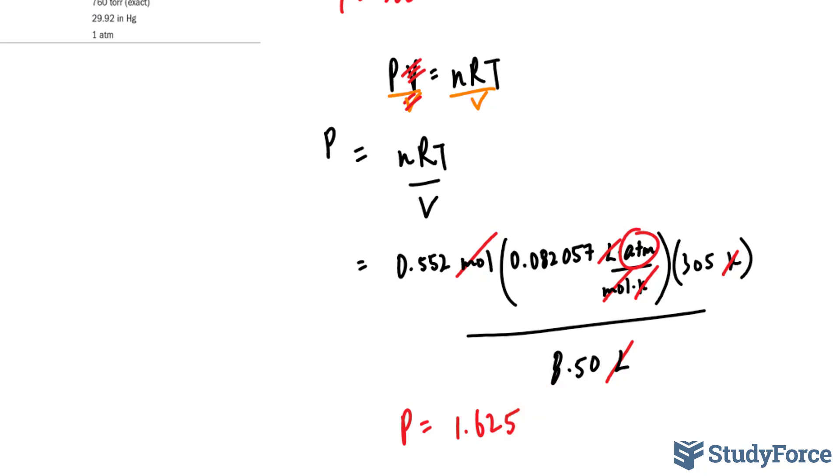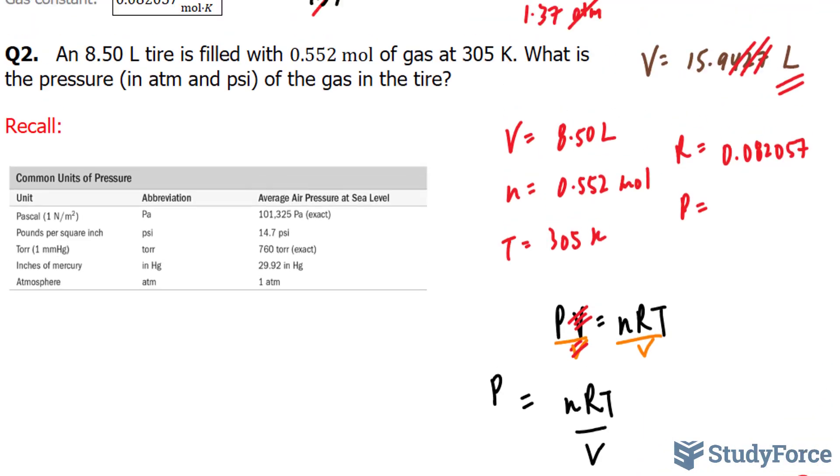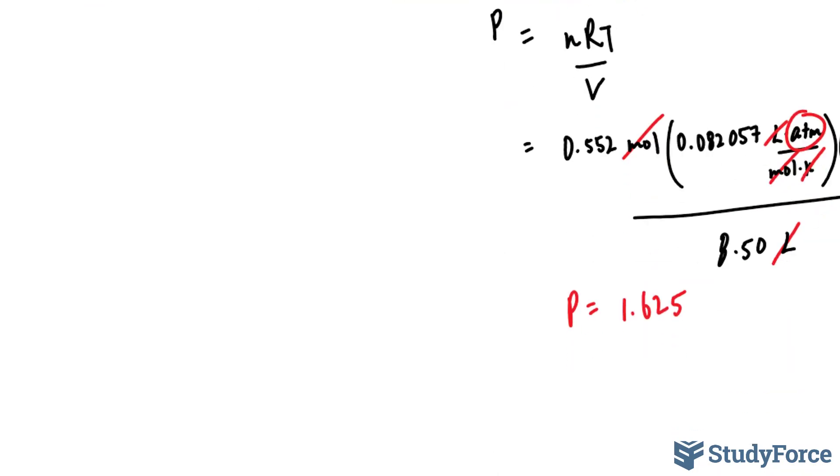Now, our final answer should have three significant figures, because we started with three significant figures, especially since we've multiplied everything all across. There's no reason not to.